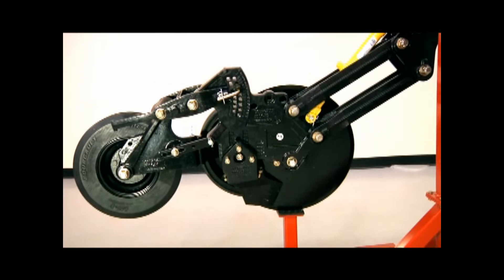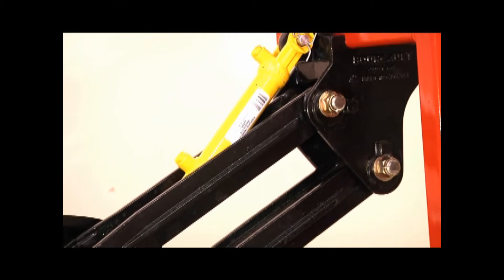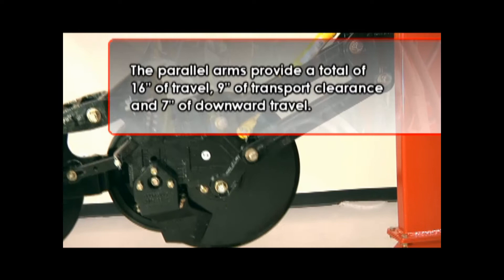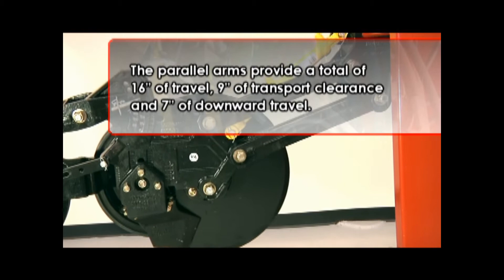The parallel arm arrangement will maintain a consistent angle of the seed boot throughout the travel of the opener. The parallel arms provide a total of 16 inches of travel: 9 inches of transport clearance and 7 inches of downward travel.